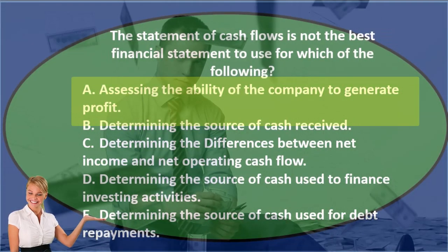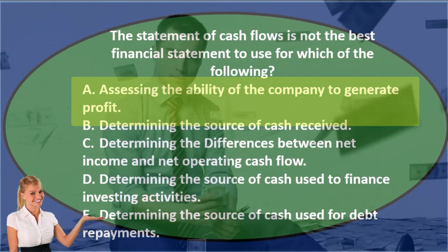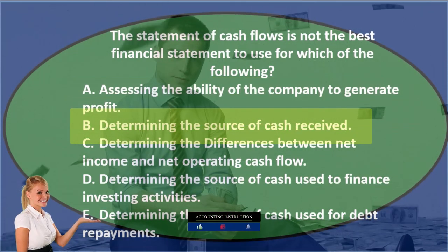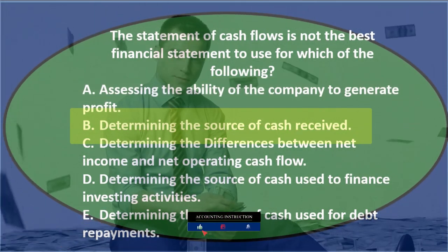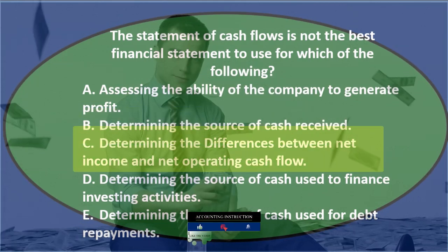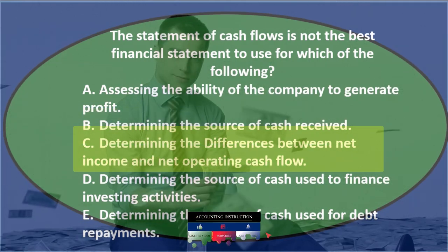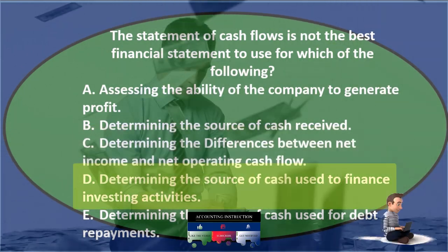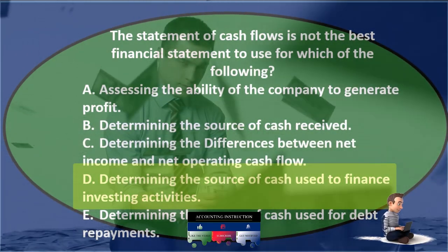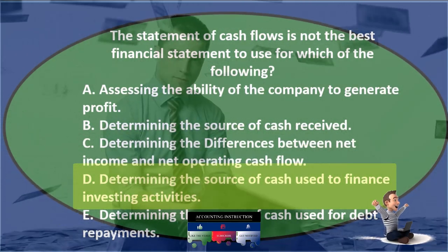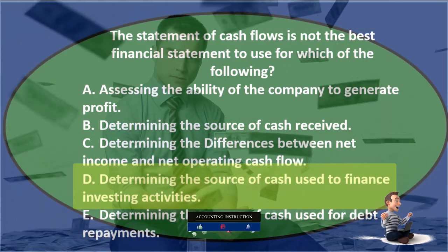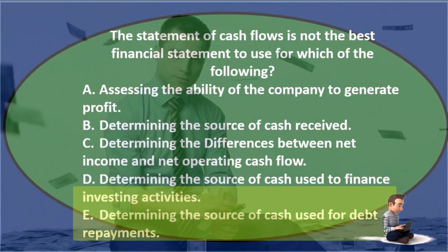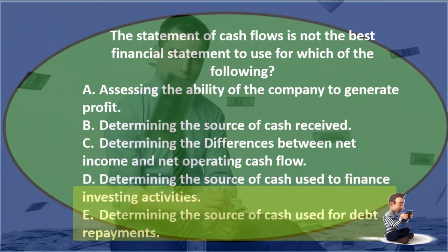A: Assessing the ability of the company to generate profit. B: Determining the source of cash received. C: Determining the differences between net income and net operating cash flows. D: Determining the source of cash used to finance investing activities. And E: Determining the source of cash used for debt repayments.